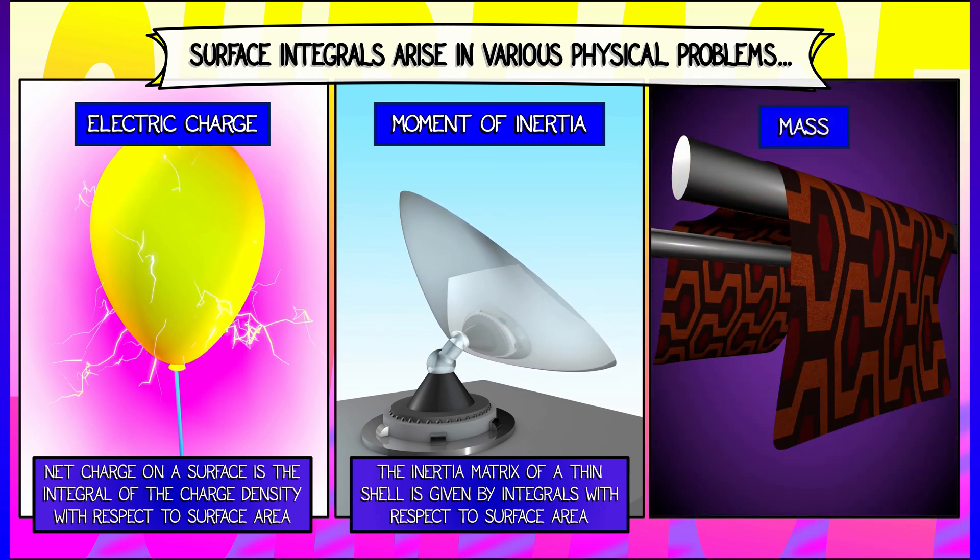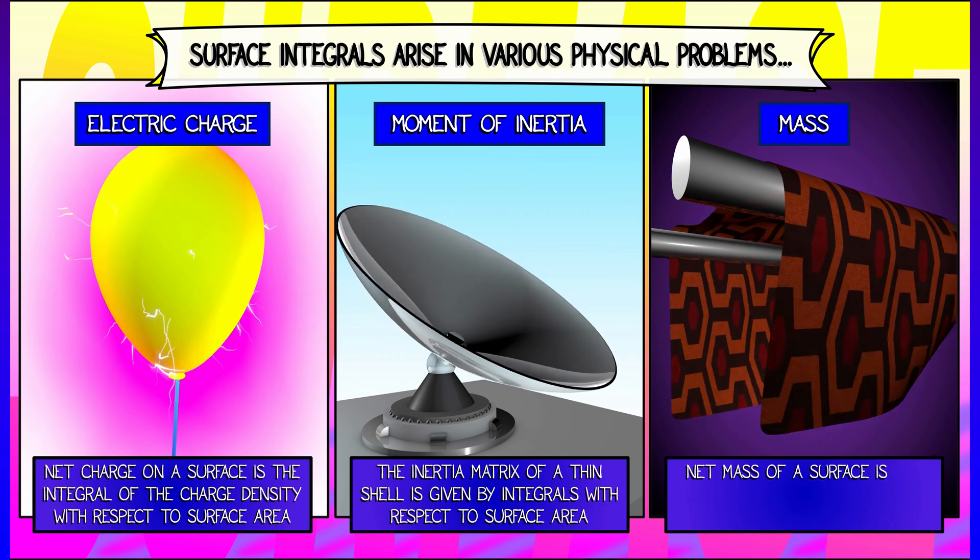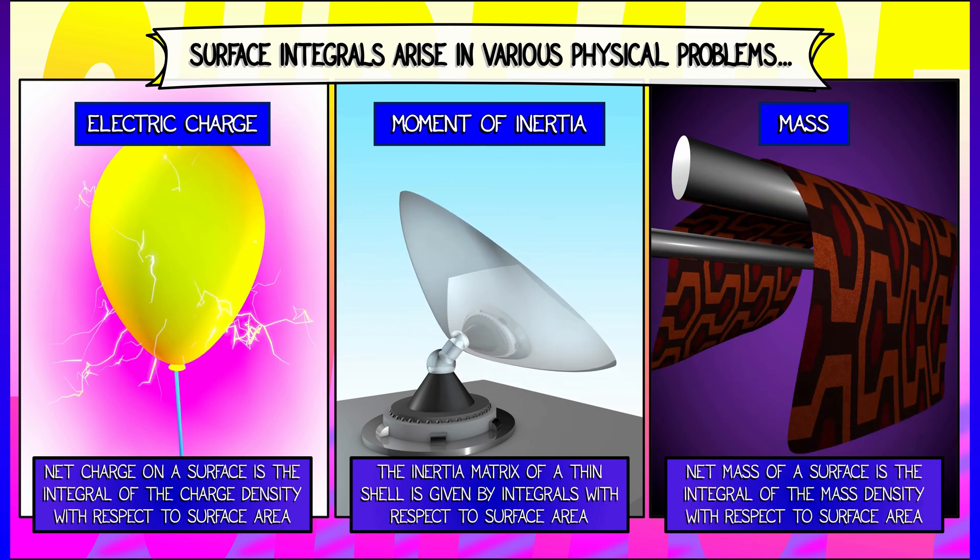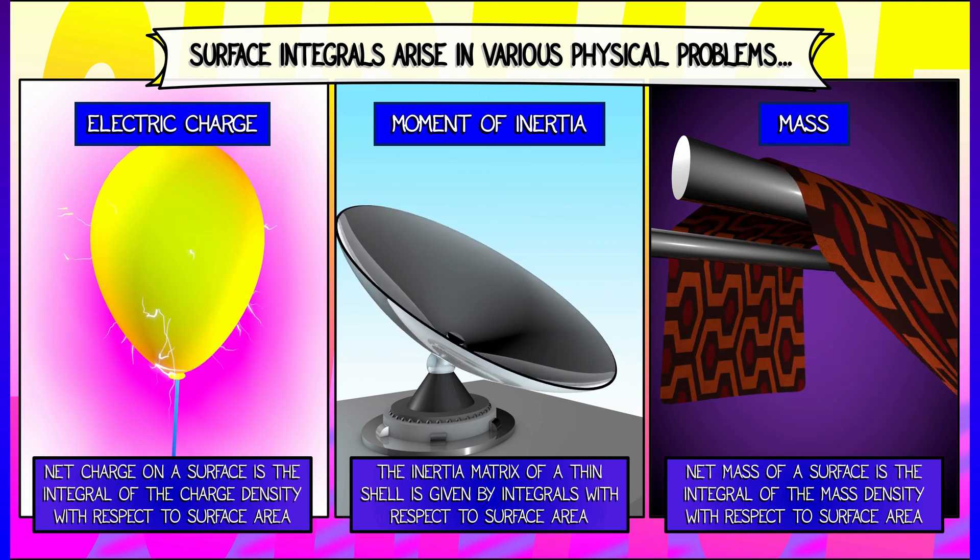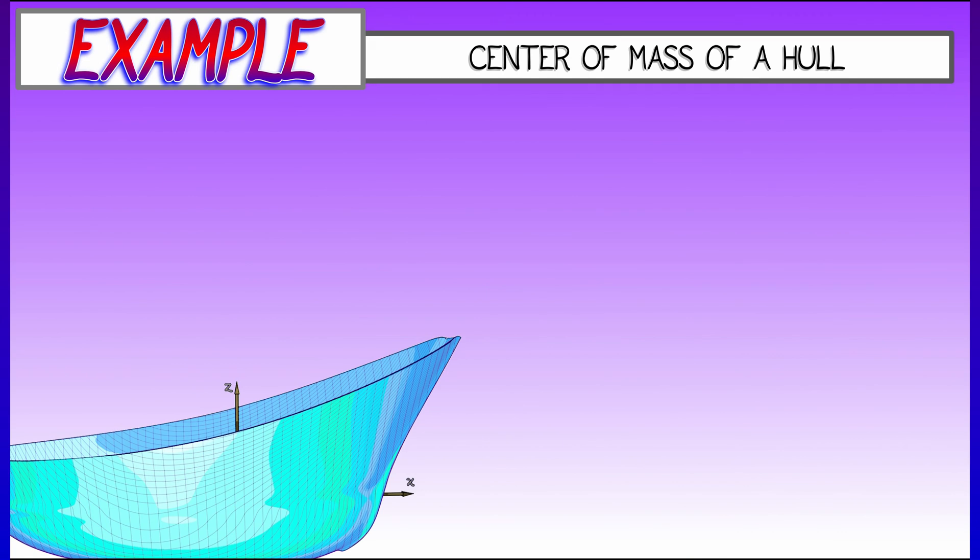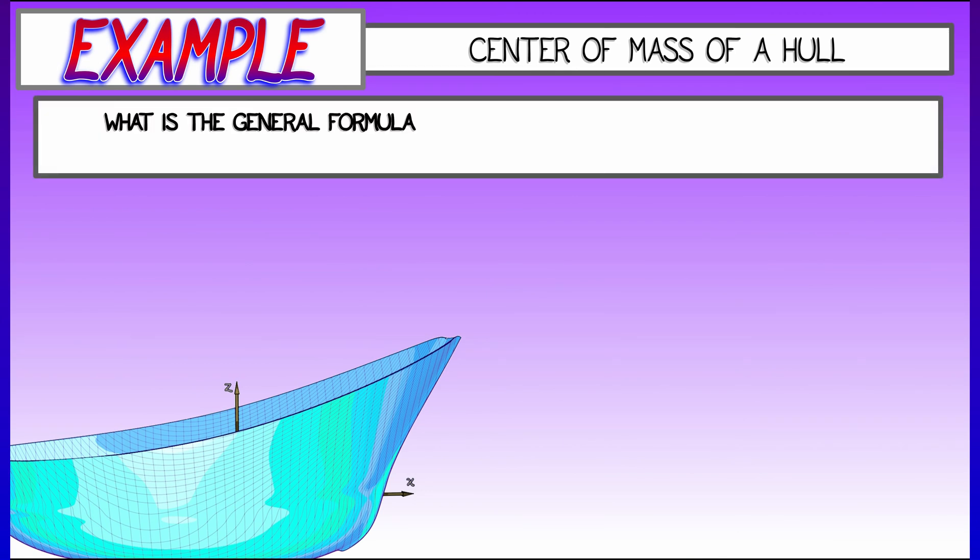And for a simpler example, if we look at just trying to compute the mass of a surface with a variable mass density, then you want to integrate that mass density with respect to surface area. Now, if we look at a slightly more general example of that, let's say trying to compute the center of mass of a thin shell, let's say the hull of a ship.